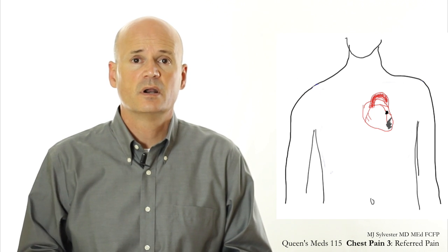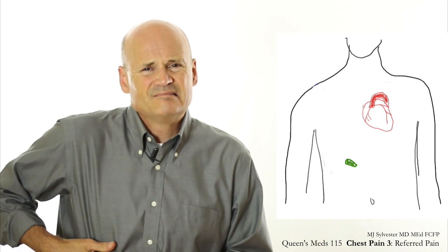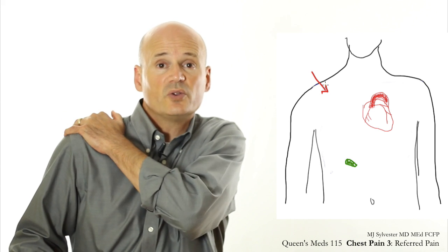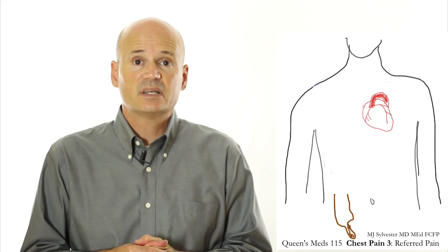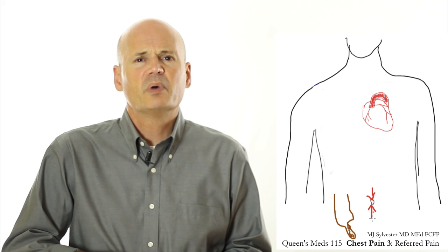Some other classic examples are an injured gallbladder, which you feel in your shoulder, or appendicitis, which can typically start as pain around your umbilicus.